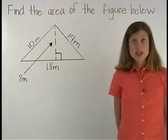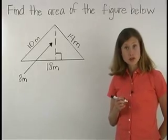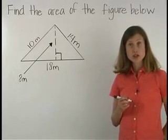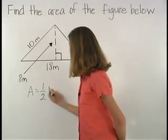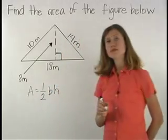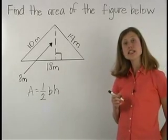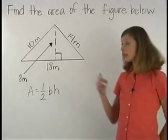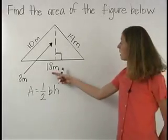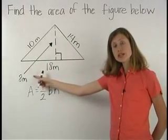To find the area of the triangle shown here, start with the formula for the area of a triangle, which is area equals one half base times height. It's important to understand that the height isn't always a part of the original triangle. In this triangle, the base is 18 meters and the height is 8 meters.